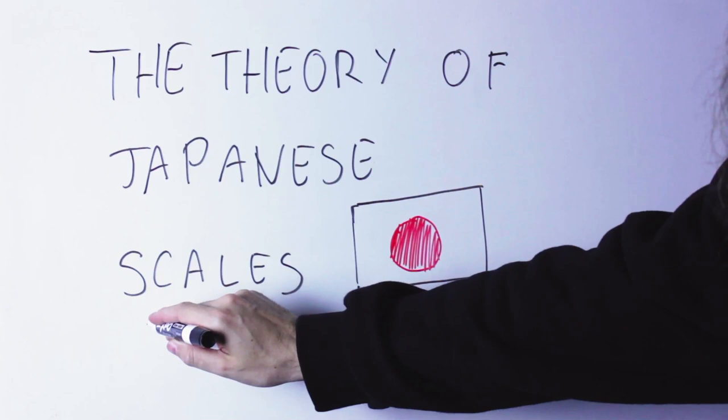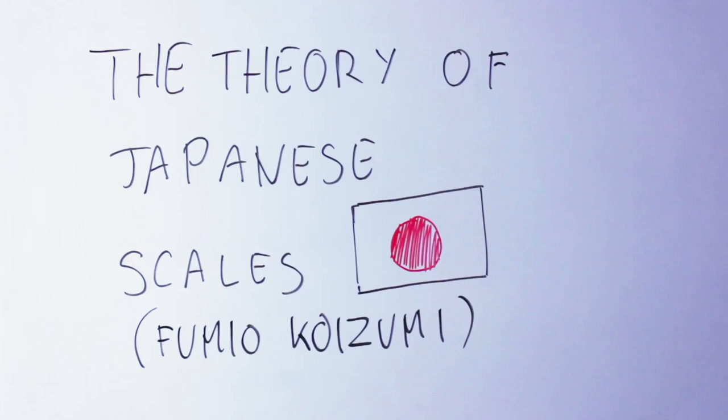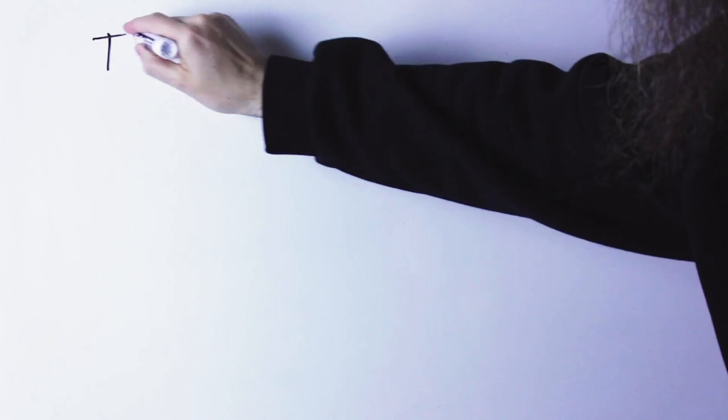Now, this theory of Japanese scales is due, to the best of my knowledge, to the theorist Fumio Koizumi, who wrote about it in the 70s. To understand what Koizumi is after, we first need to understand a little bit of Western musical theory, and specifically we need to talk about tetrachords.